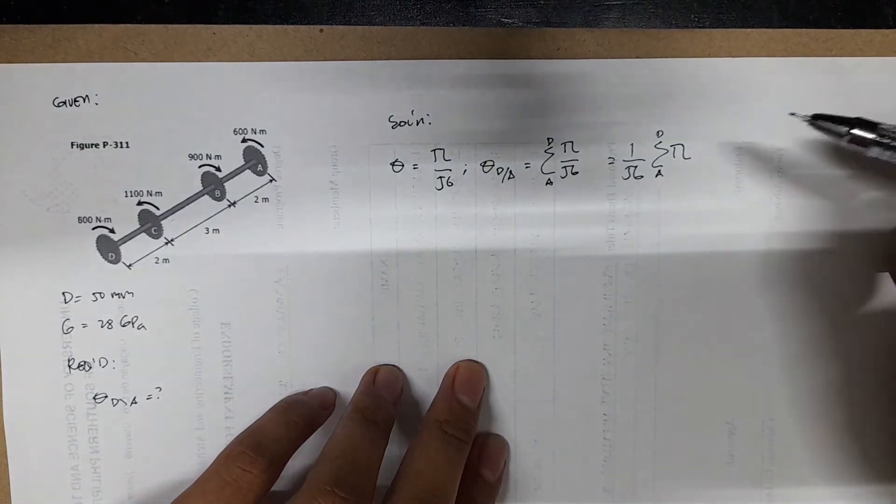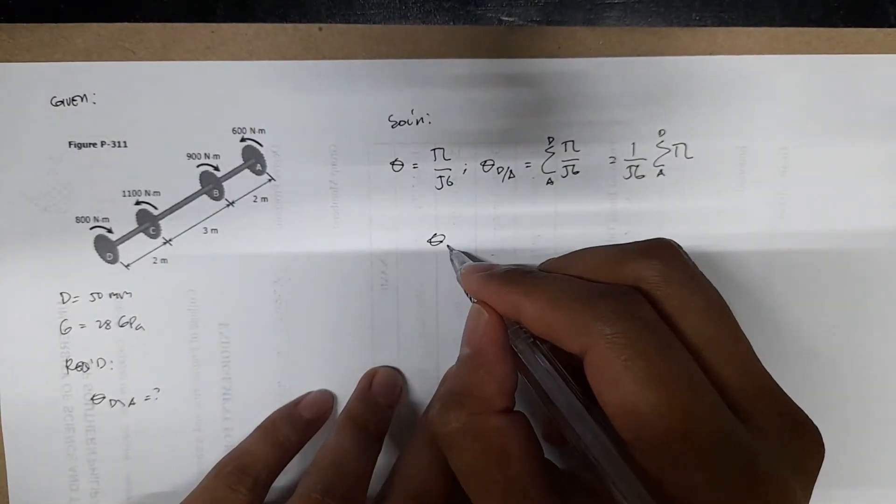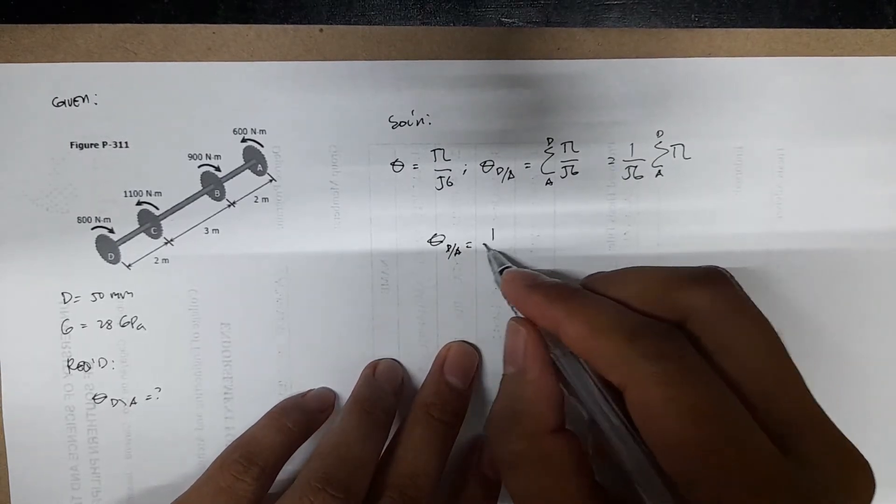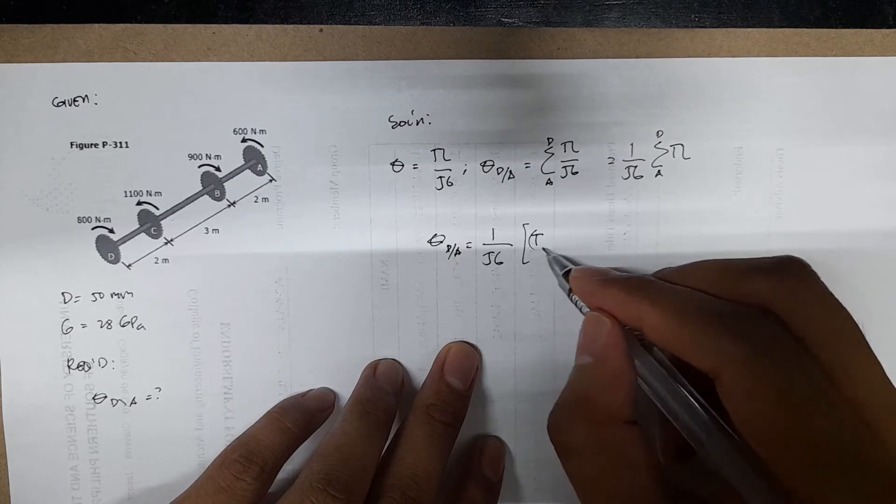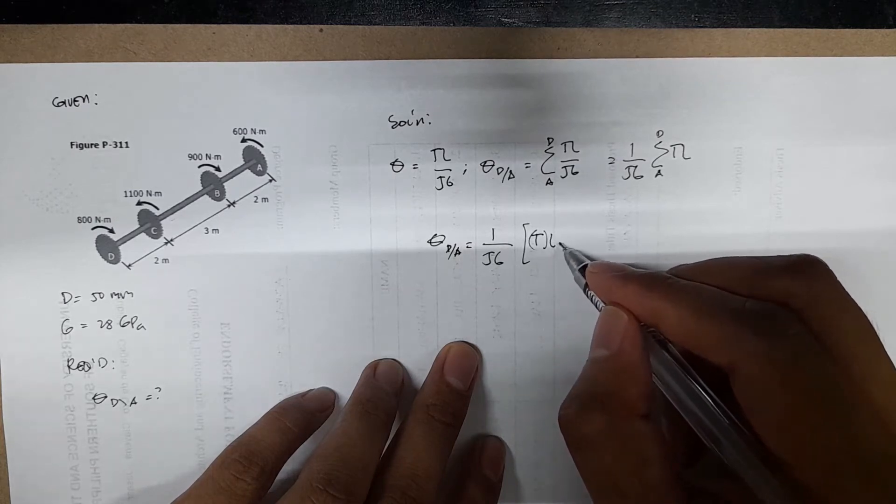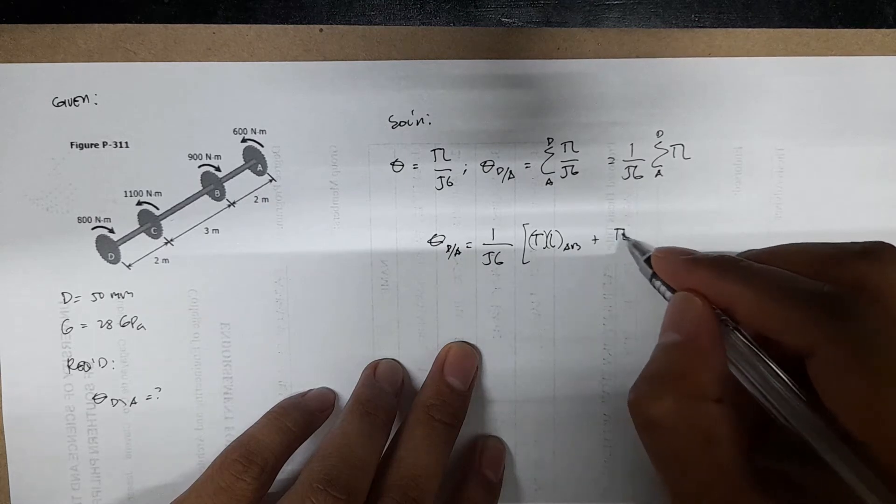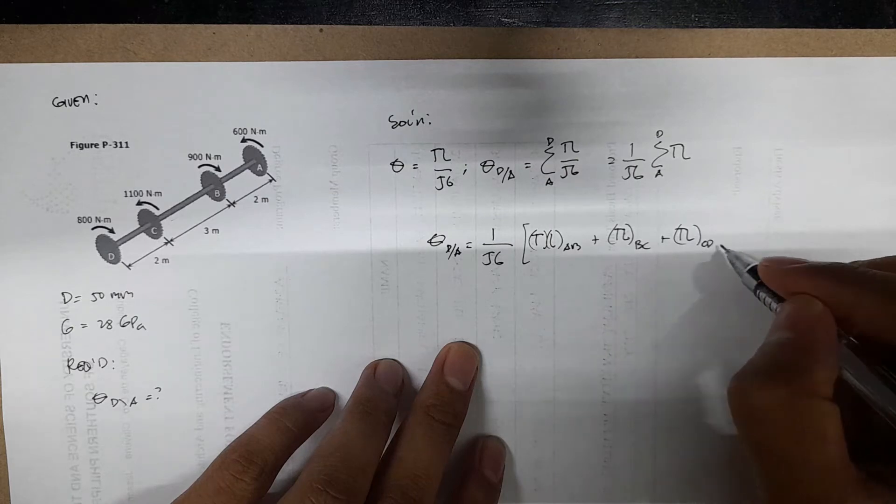So that's our working equation to solve the problem. So we have theta DA equals 1 over JG, we have TL AB, plus we have TL BC, plus TL CD.